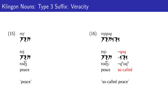Moving on to type 3 suffixes marking veracity. Here we have 'roj', the word for peace. If we add the 'koq' suffix — the type 3 suffix marking something as so-called — we have a word meaning so-called peace, which would imply that the peace is not real.